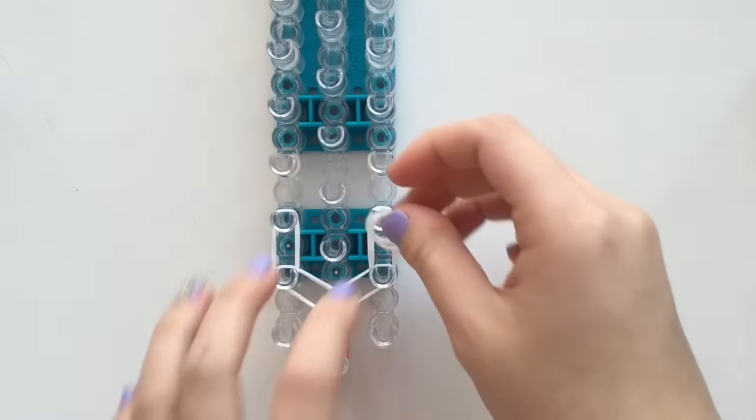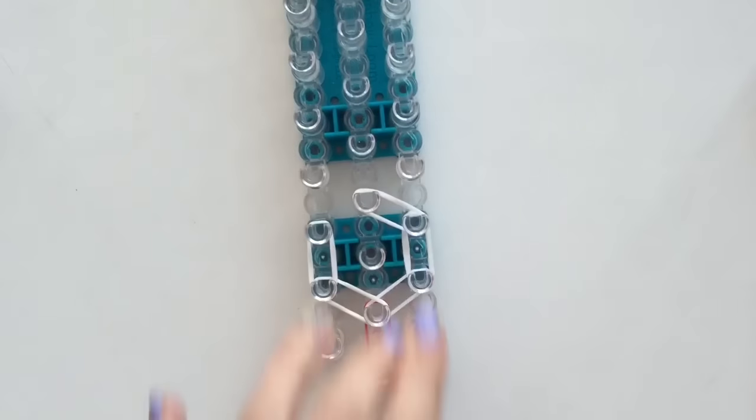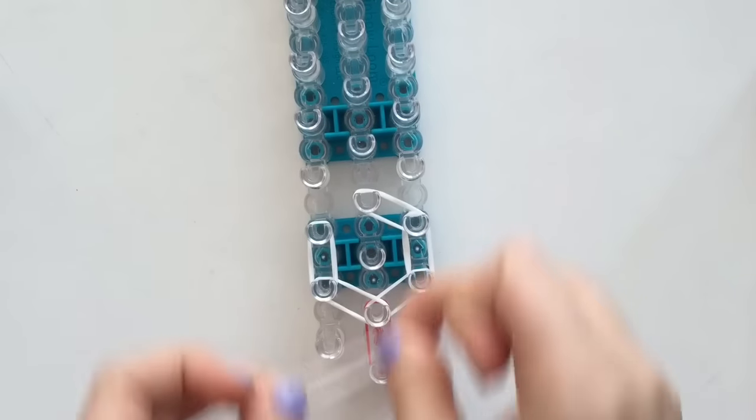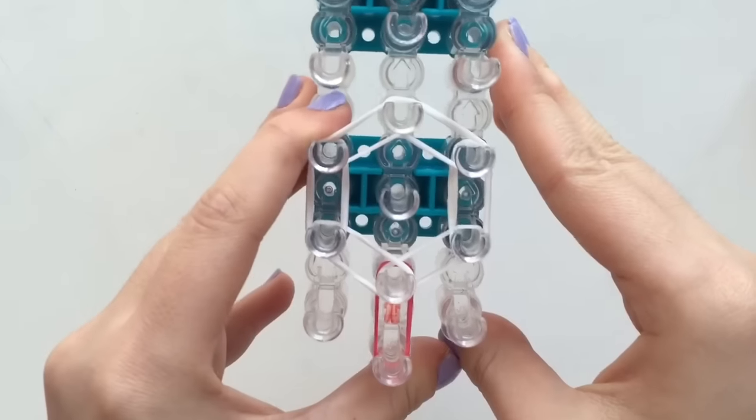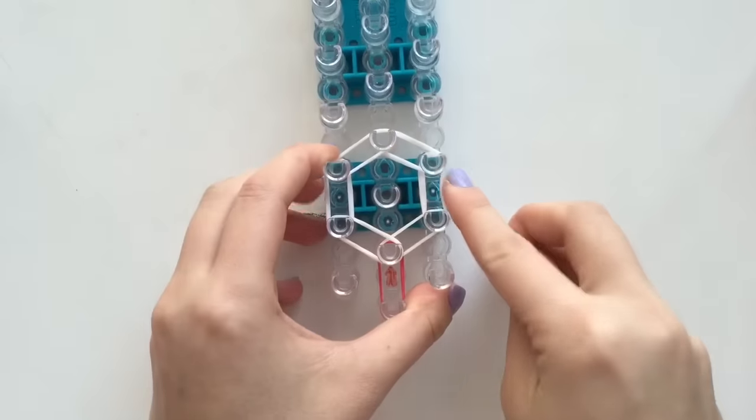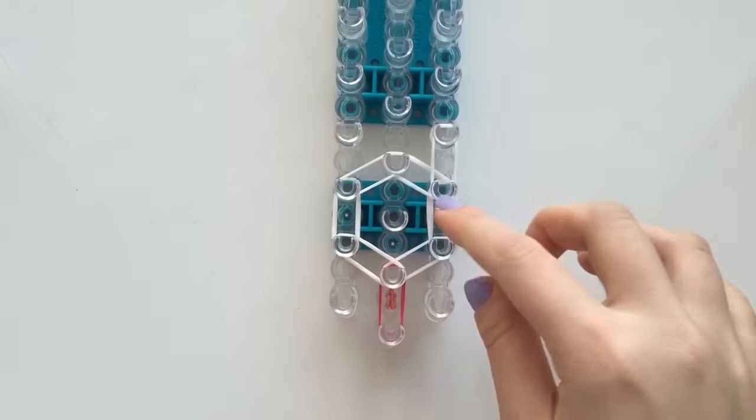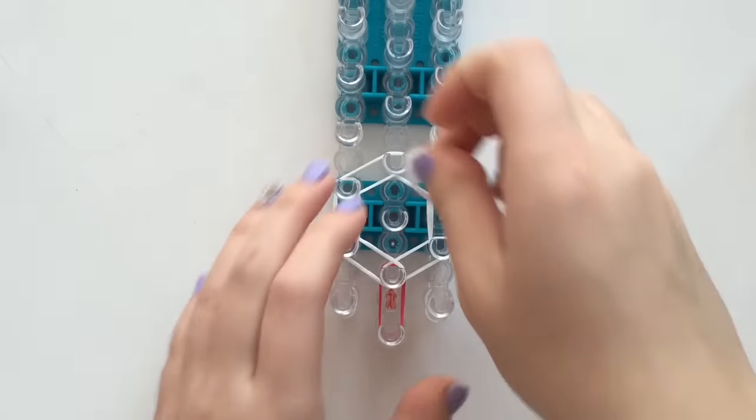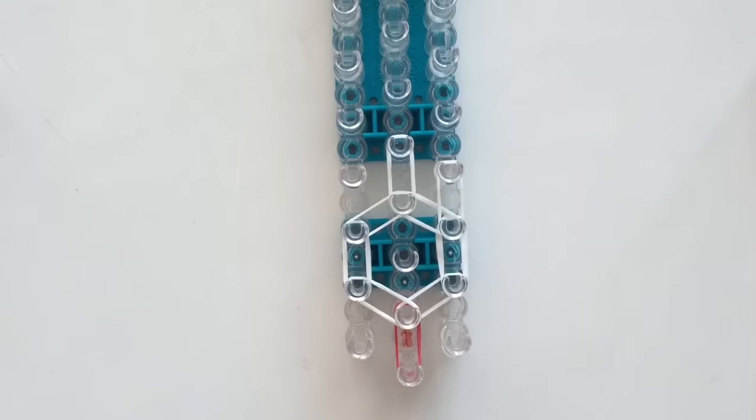And then I'm going to take more rubber bands and go from the right to the center and also from the left to the center, so it creates a hexagon. I'm just pushing some bands down on the pegs to make more room for new rubber bands. And I'm going to extend out.